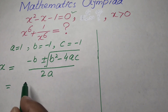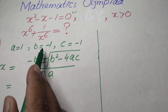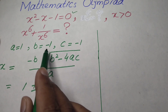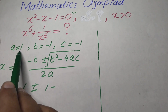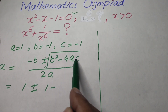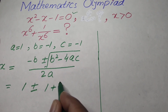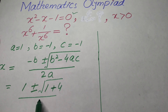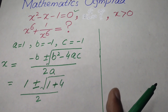We substitute all values of a, b, and c. The value of b is −1; when substituted, the negative times negative gives us +1. The square of −1 is +1, minus 4 times a (which is 1) times c (which is −1), so we get +4. The denominator is 2a, and since a = 1, we get 2.